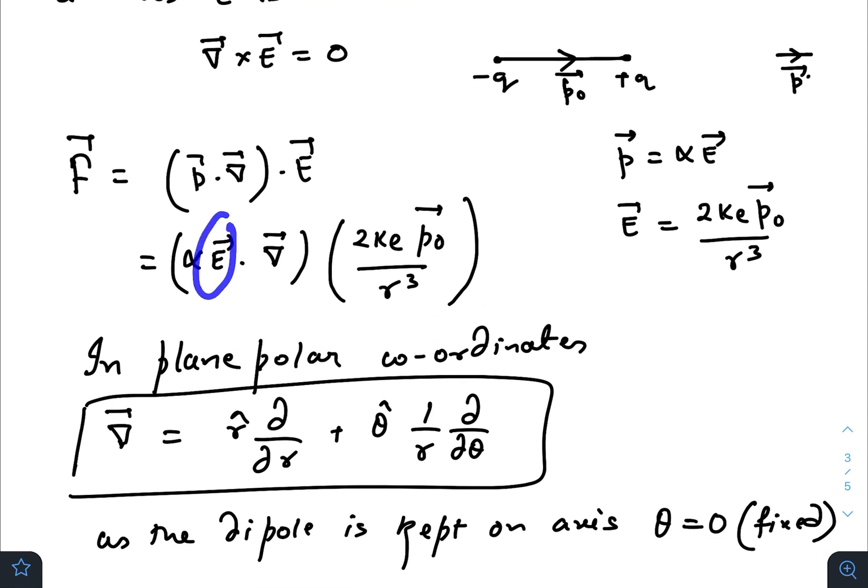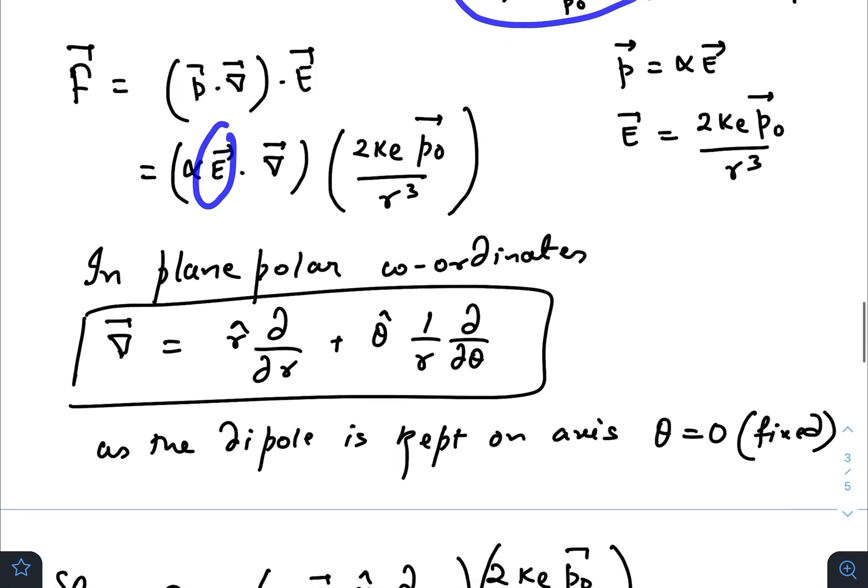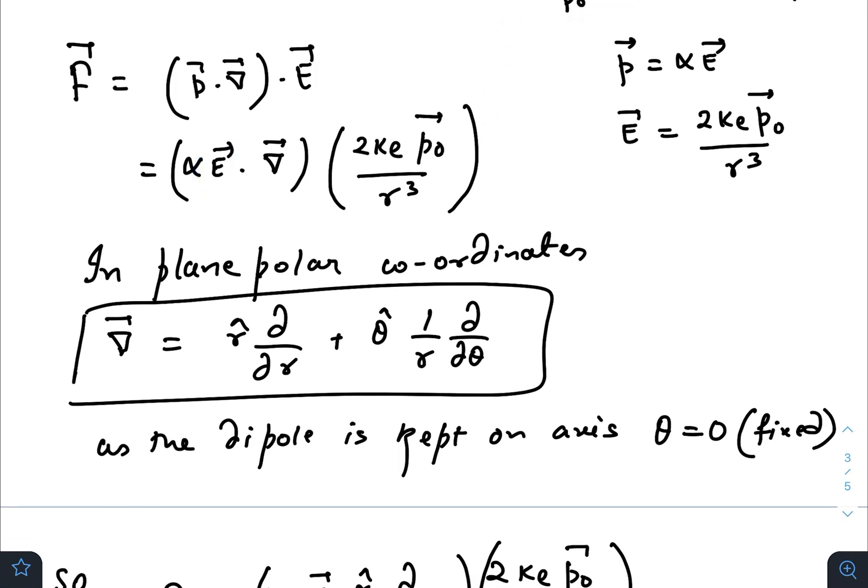This electric field is the electric field created by this dipole. For plane polar coordinates, like for Cartesian coordinates it was i cap del del x plus j cap del del y, for plane polar coordinates this operator can be written like this.